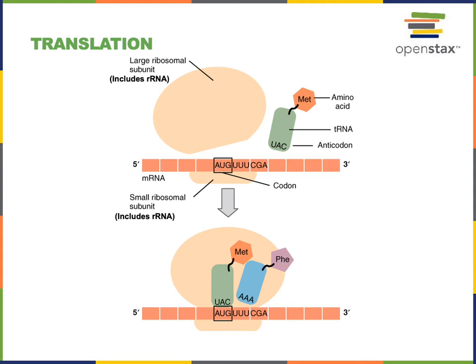Here we can see the roles of ribosomal RNA and transfer RNA in the mechanism of translation. Ribosomal RNA is part of the structure of the ribosome, and ribosomal RNA actually forms the active site that enables the formation of the peptide bond — it catalyzes the formation of the peptide bond. The ribosome is an interesting example of an enzyme where RNA is a major catalyst instead of protein. And then tRNA, transfer RNA, is functioning to carry amino acids into the ribosome during translation.